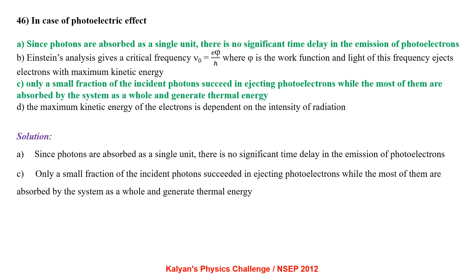In the photoelectric effect, since photons are absorbed as a single unit, there is no significant time delay in emission of photoelectrons — statement A is correct. Einstein's analysis gives critical frequency ν₀ = φ/h. Only a small fraction of incident photons succeed in ejecting photoelectrons; most are absorbed by the system as a whole and generate thermal energy — statement C is correct.